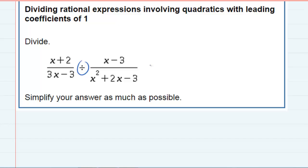So that's the first thing I'm going to do, is just rewrite this problem. The first one stays the same, x plus 2 in the top, 3x minus 3 in the bottom, but I'm going to switch the division to multiplication by flipping the second, bringing that x squared plus 2x minus 3 to the top, and the x minus 3 to the bottom.